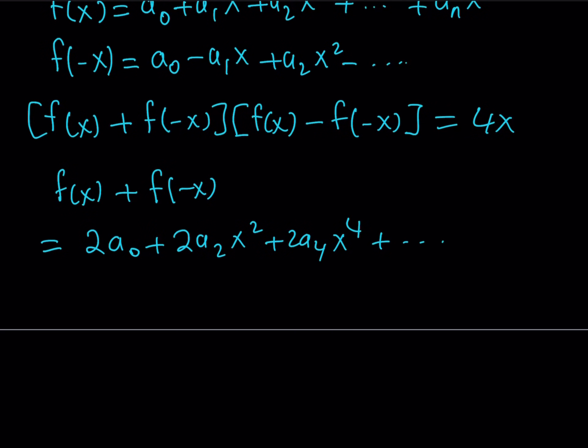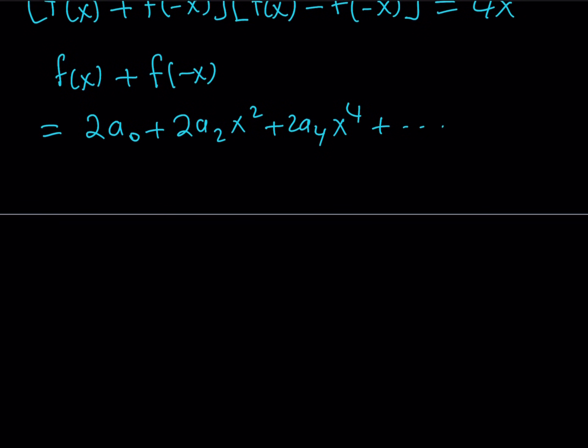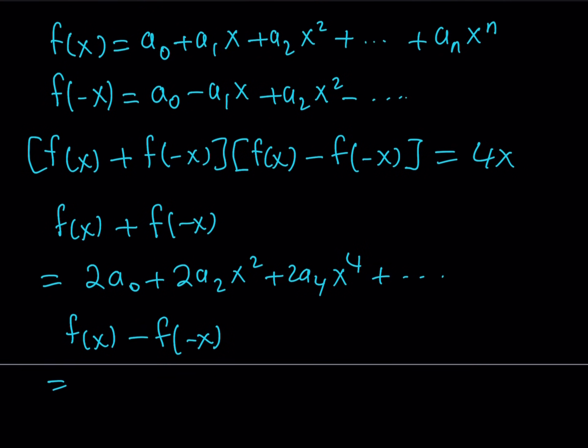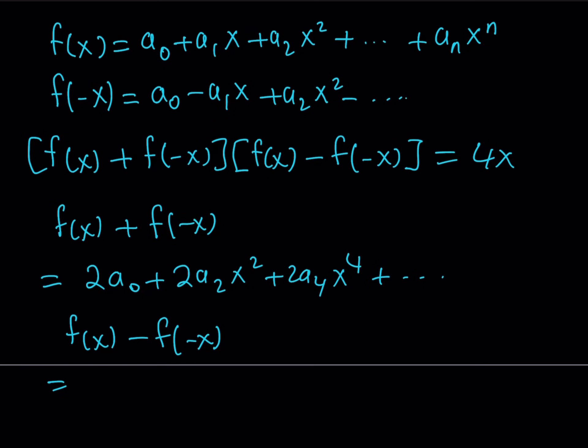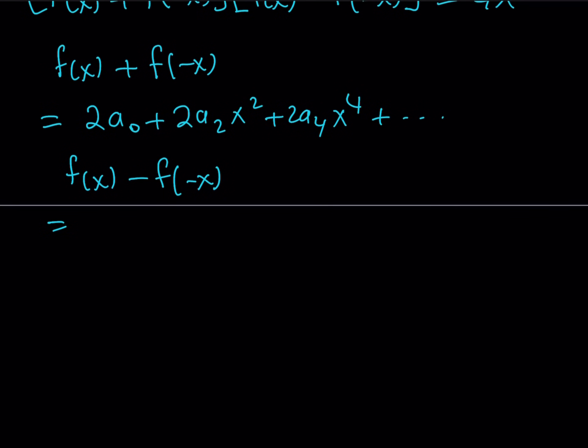For the difference, you get something similar but with odd powers. If you subtract these two expressions, the even terms cancel out and you get a1x plus a1x, which is two times that. So it's 2a1 x plus 2a3 x cubed plus 2a5 x to the 5th power. Those are my two expressions.